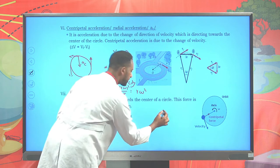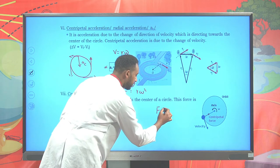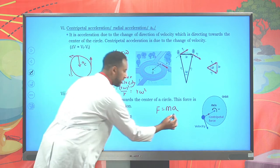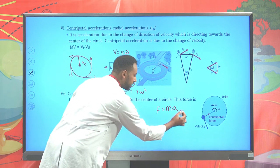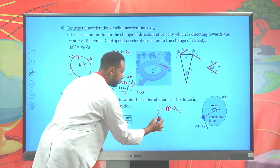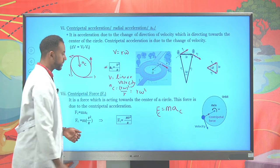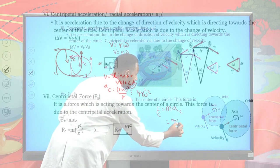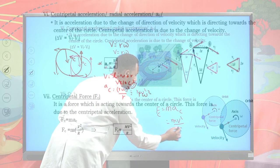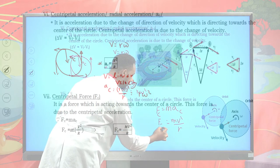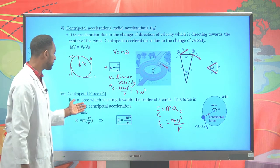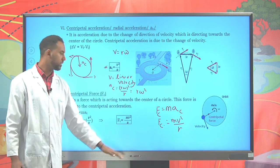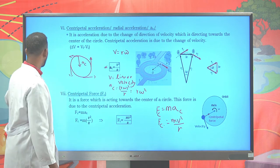We know that force equals mass times acceleration. If the acceleration is centripetal acceleration, there will be a centripetal force. So mass times centripetal acceleration, or mv²/r, is the centripetal force — the force acting towards the center. Keep this in mind.